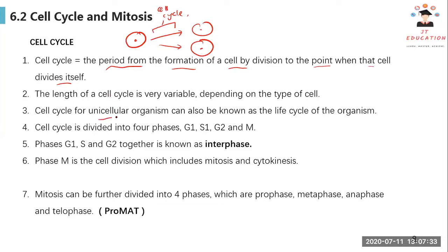The cell cycle for unicellular organism is known as the life cycle of an organism. For example, unicellular organism is amoeba species, or paramecium species.